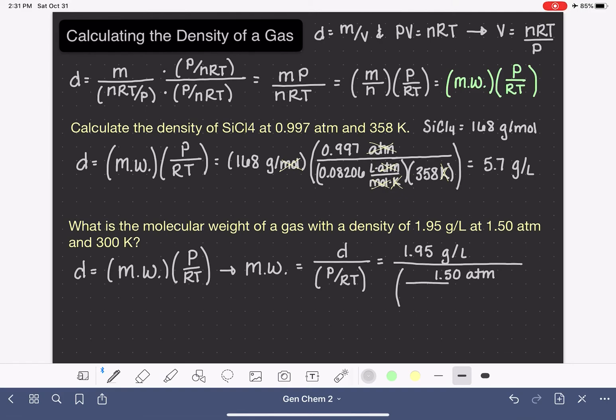Divided by the ideal gas constant, 0.08206 liters atmospheres per mole Kelvin, and multiplied by the temperature in Kelvin, which is 300.